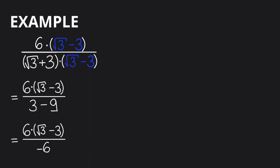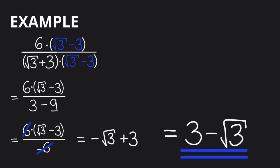And as you can see, we have a common factor, 6 and minus 6. So make sure to divide both the top and the bottom by 6. Now all we have left is minus the square root of 3 plus 3, which gives us our solution: 3 minus the square root of 3.